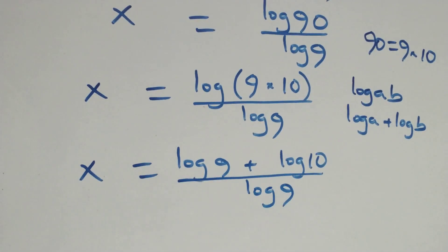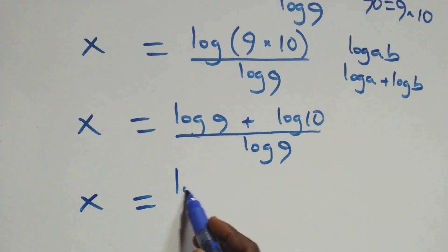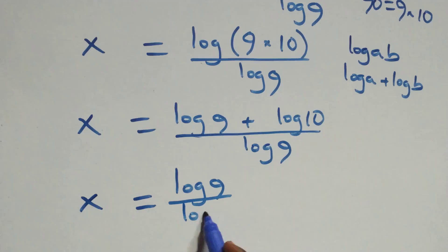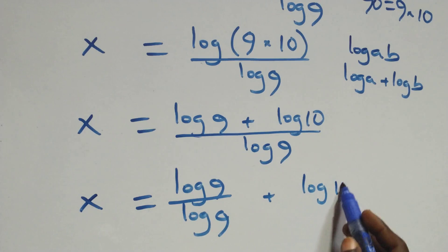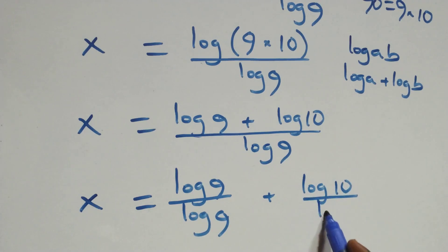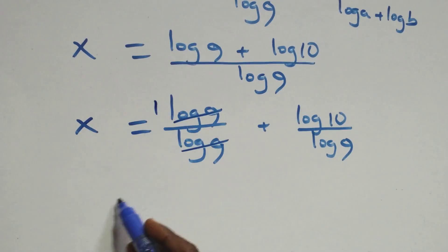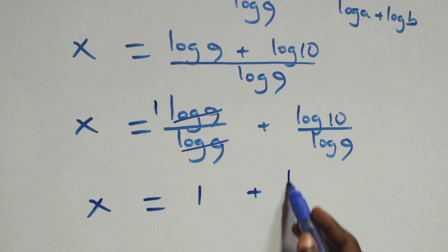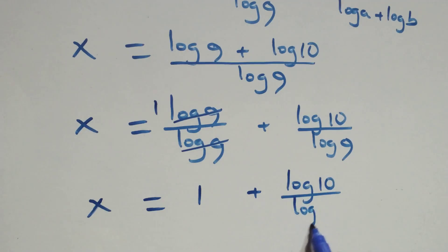We separate this into two fractions, and we have x equals to log 9 over log 9, plus log 10 over log 9. The log 9 terms cancel each other, leaving 1. Which implies x equals to 1 plus log 10 over log 9.